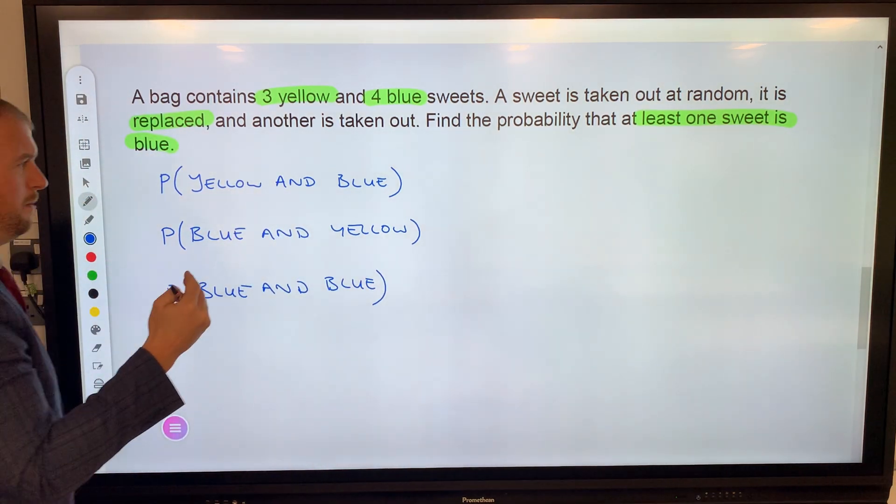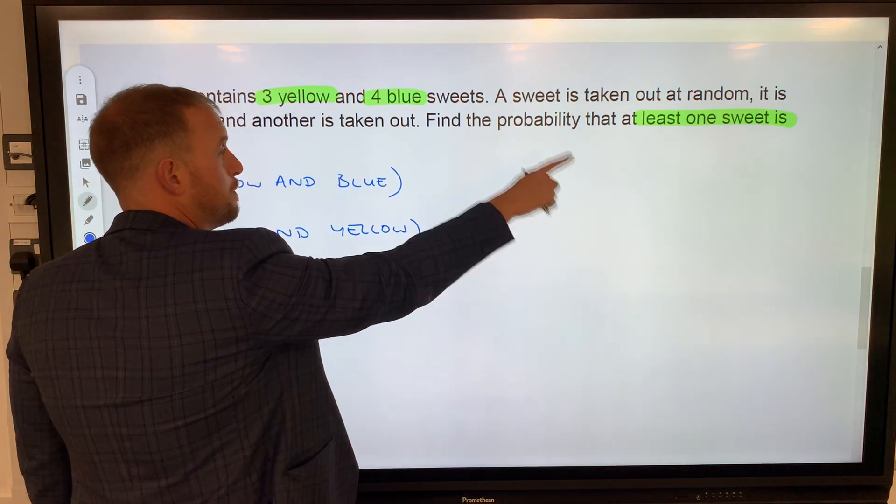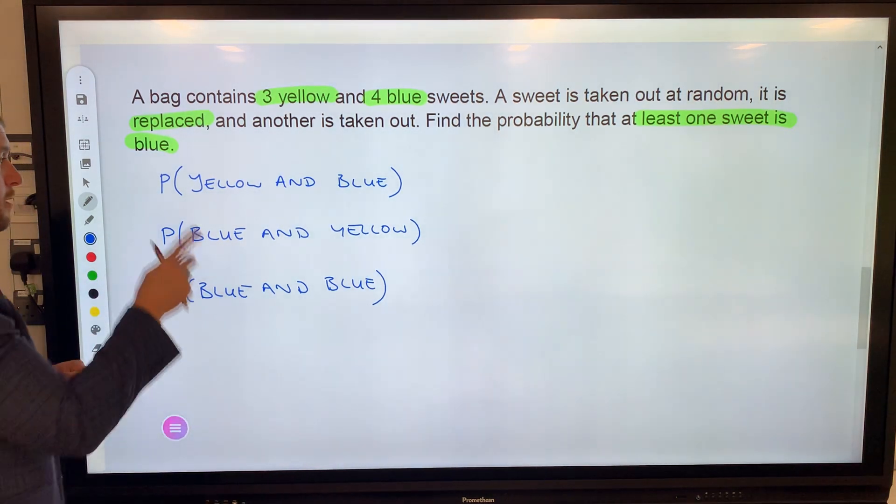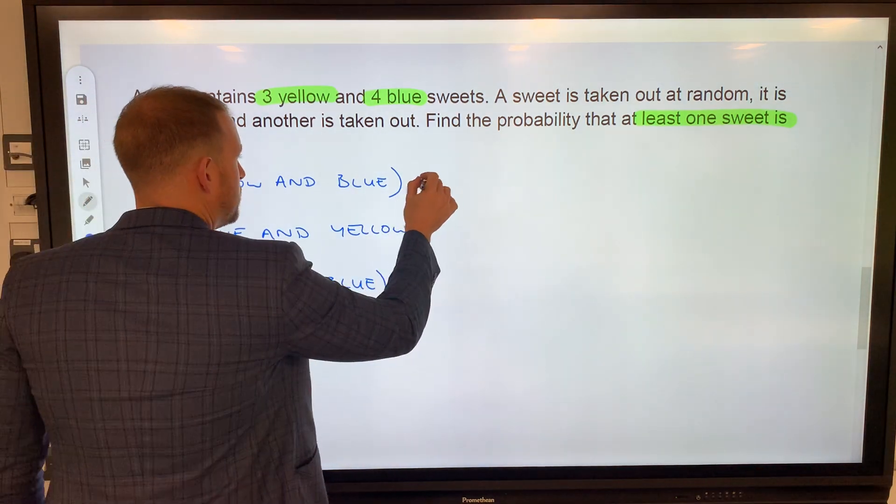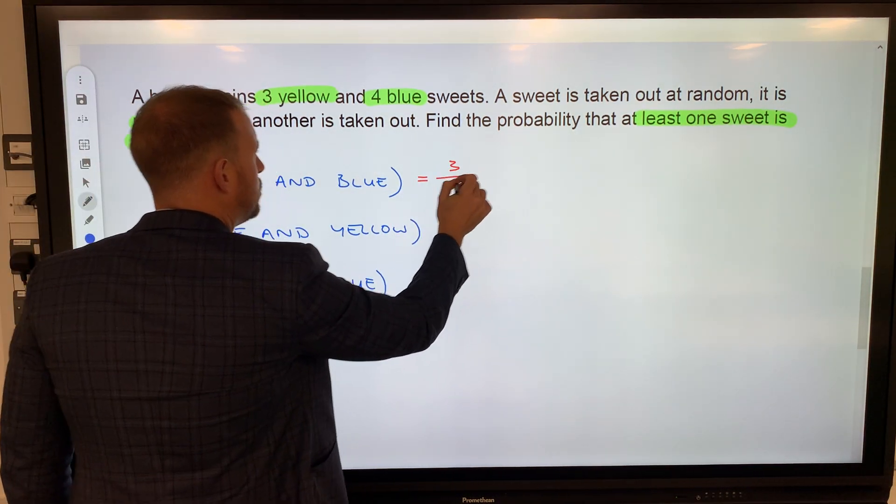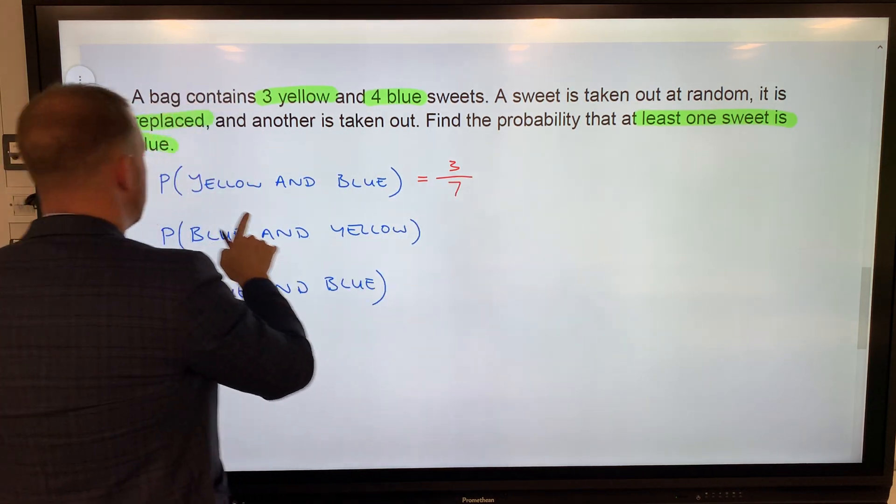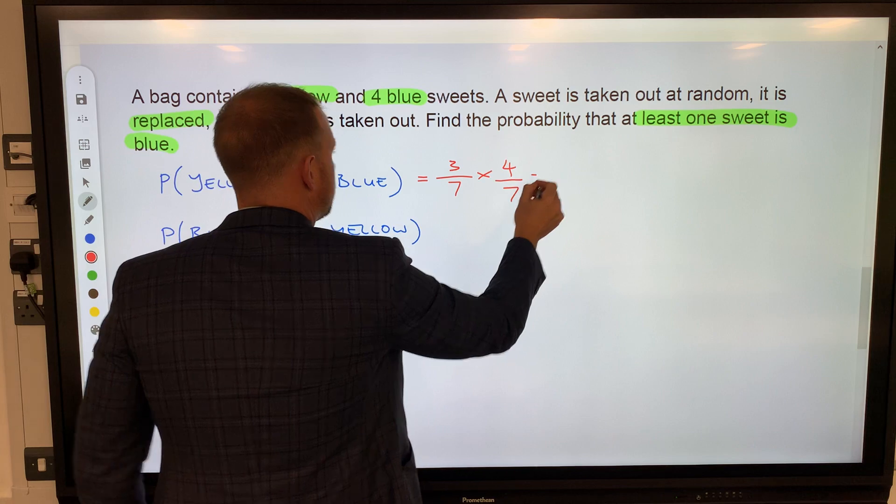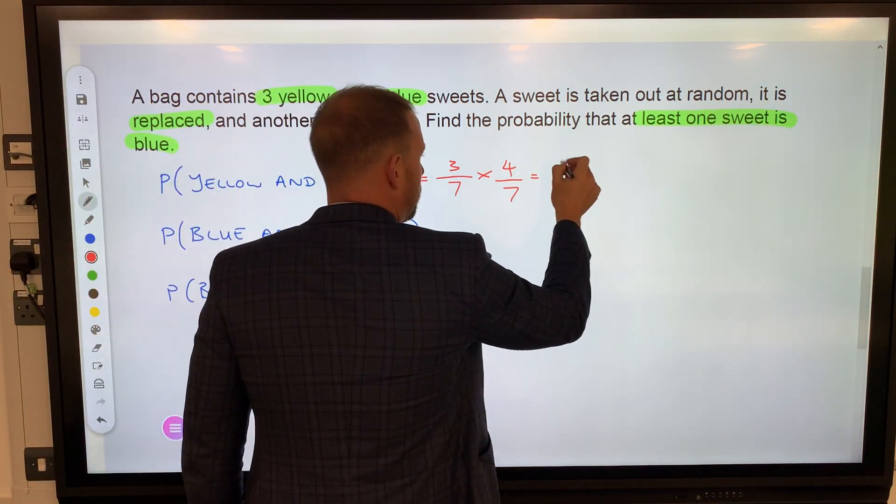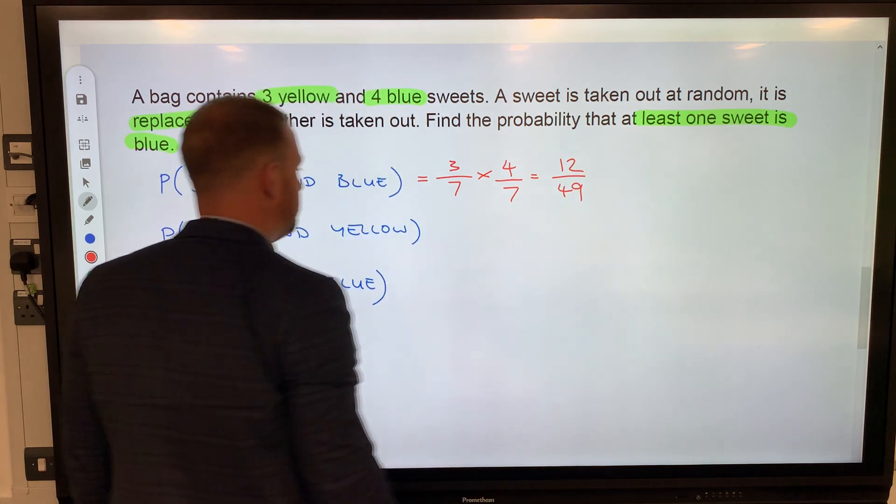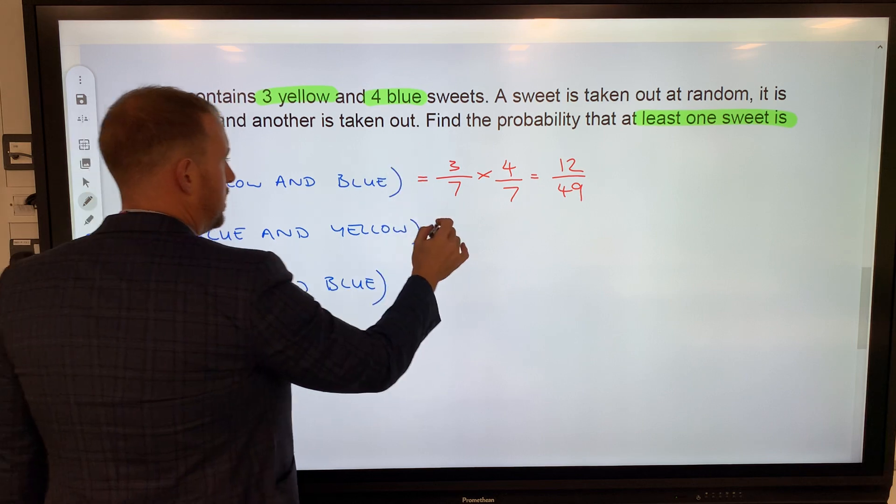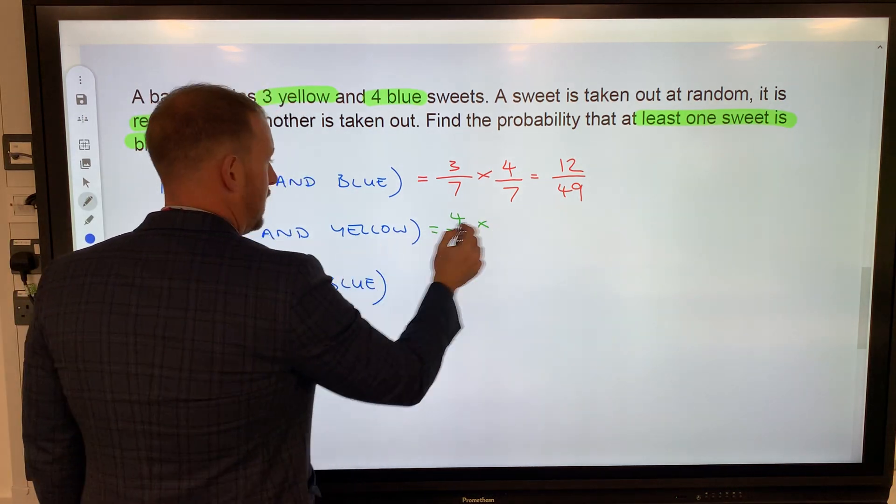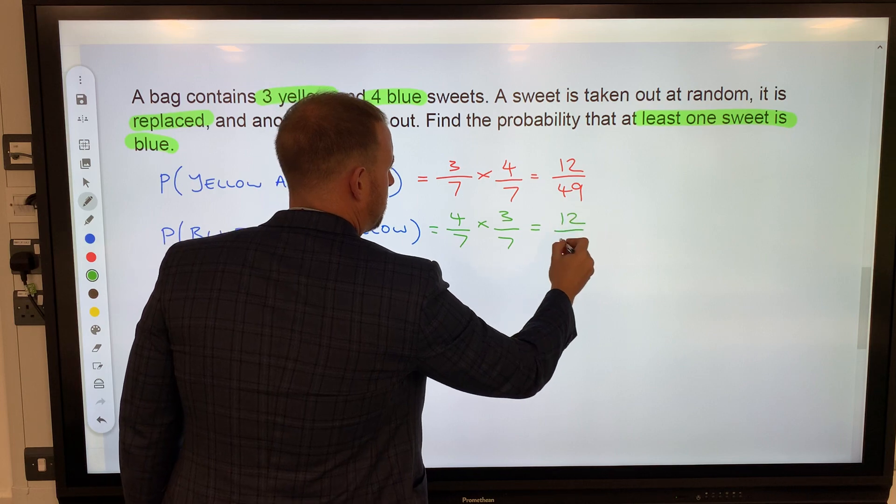We could have a yellow and blue, we could have blue and yellow, or we could have blue and blue. I've listed all my possibilities that would satisfy the question of at least one sweet is blue. The only other variation would be yellow and yellow, which doesn't work because it's got to be at least one blue. Yellow: I've got three yellow out of seven altogether. Probability of yellow and blue: four out of seven. It is replaced, that's why there's always seven. 3 times 4 is 12, 7 times 7 is 49.